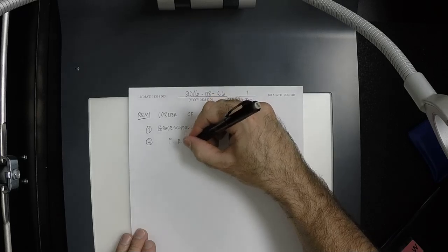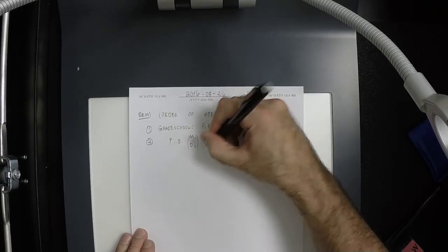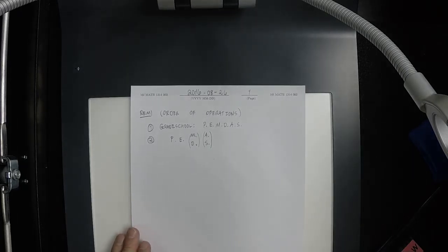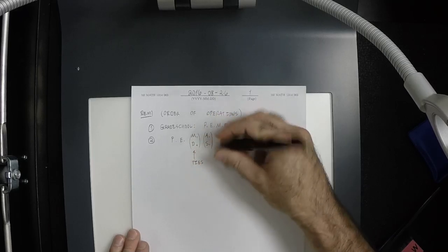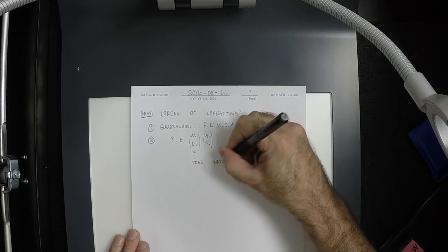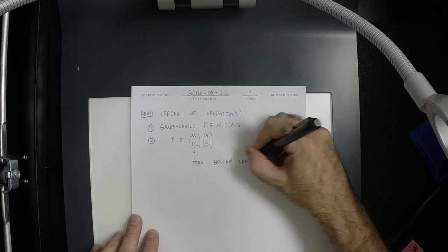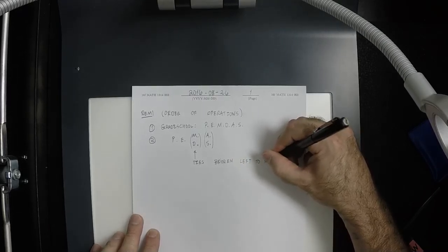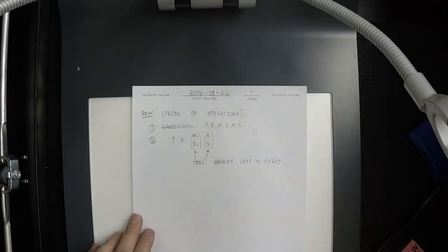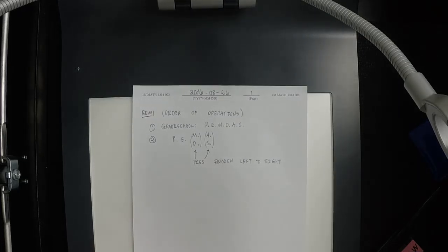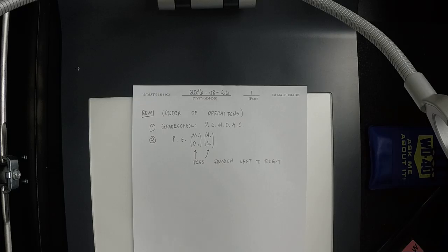These occur as a group, and when you have a tie, ties are broken left to right. For example, on the online homework, there's a question that looks like this: 16 divide 4 multiply 4.